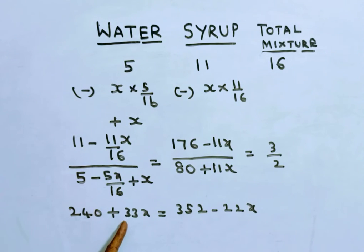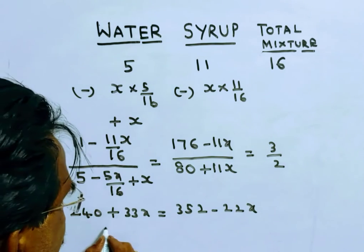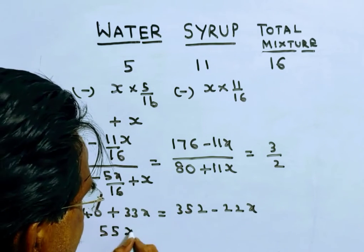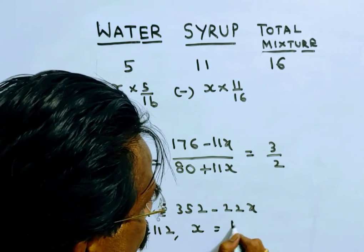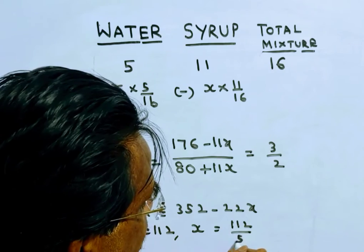Now 55x is equal to 112. So x is equal to 112 by 55.